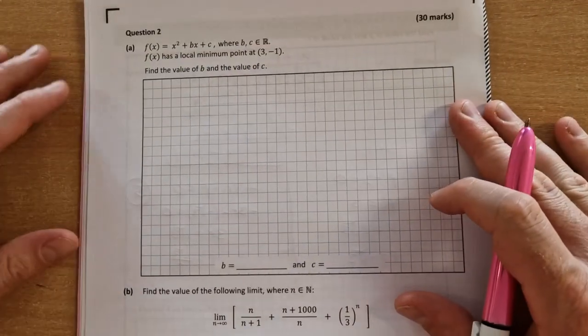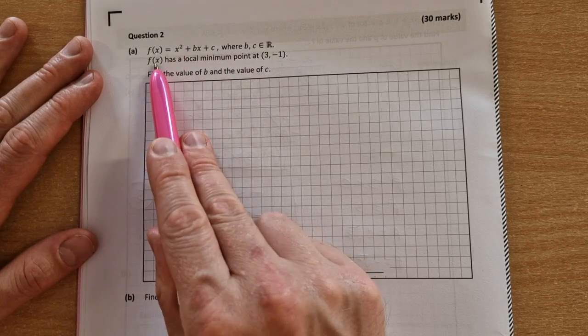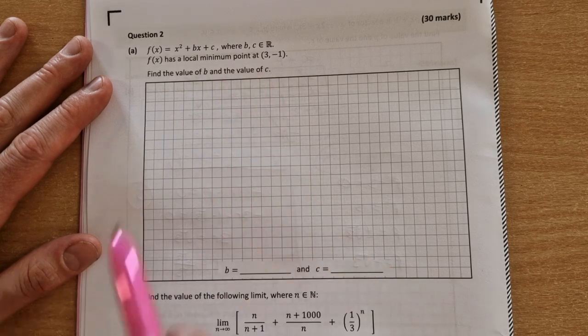Paper 1 Question 2 was a functions and calculus question. In part (a) we're given a function f(x) equals x squared plus bx plus c. We're told it has a local minimum at the point (3, -1) and find the value of b and the value of c.